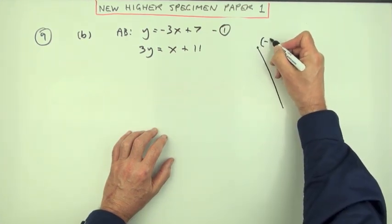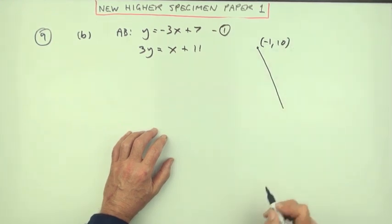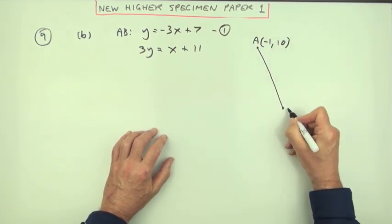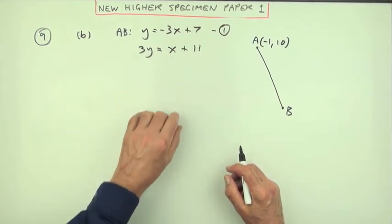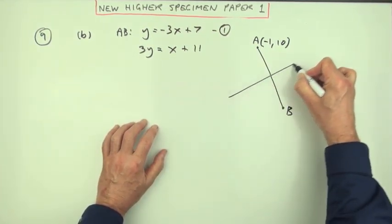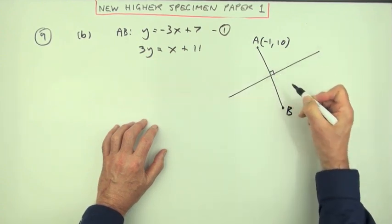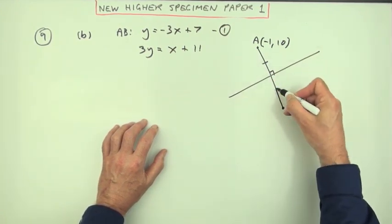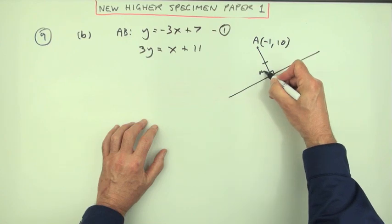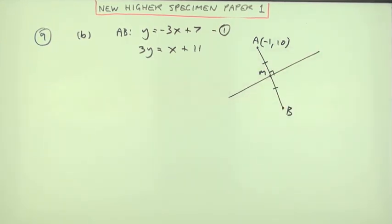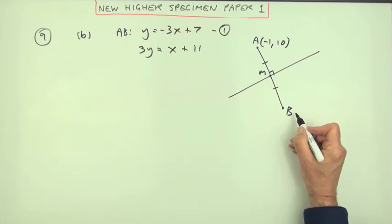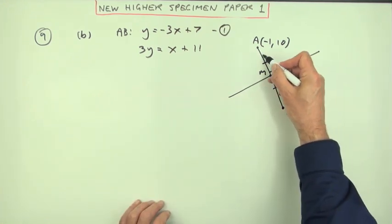Notice it's got a negative gradient, so this line is going down quite steeply. The point was (-1, 10), that's point A. This line, taking the 3 across and dividing, has a gradient of a third. It's the perpendicular bisector—it cuts at right angles and in the middle. Let's call that point M.